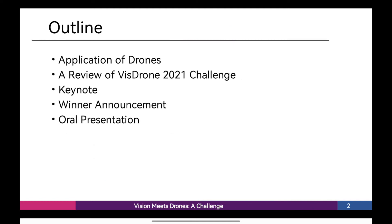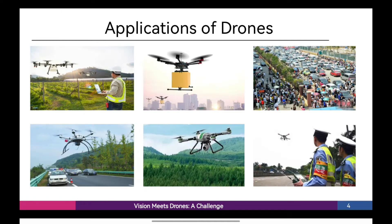Our workshop mainly consists of five parts. First, let's talk about the applications of drones. Drones, or general unmanned aerial vehicles, equipped with cameras have been fast deployed to a wide range of applications, including agriculture, aerial photography, fast delivery and surveillance. Consequently, automatic understanding of visual data collected from these platforms becomes highly demanding, which brings computer vision to drones more and more closely. We carefully annotated ground truth for various important computer vision tasks, named VisDrone, to make vision meet drones.